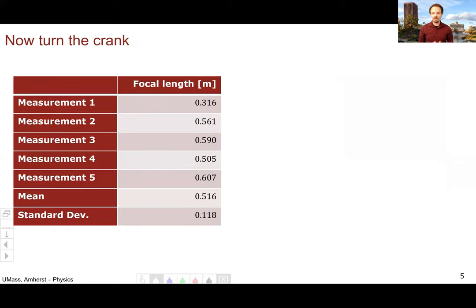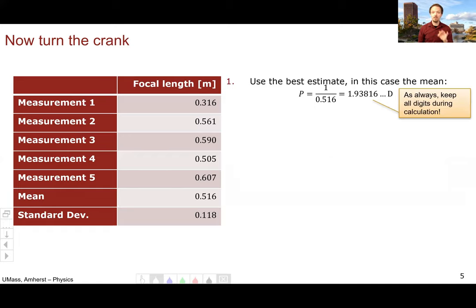So now let's turn the crank and calculate the power of this person's glasses. For the best estimate, we'll use the mean, 0.516 meters. So the power is 1 over 0.516 meters, giving us 1.93816 diopters. As always, you want to keep all your digits in the middle of the calculation.